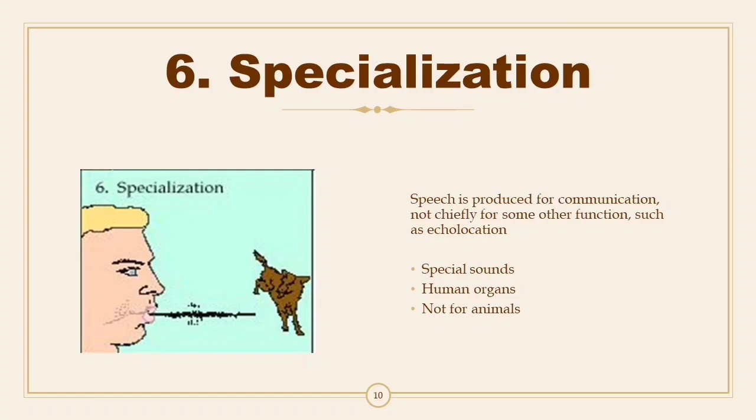Sixth: Specialization. Speech is produced for communication, not simply for some other function such as echolocation. The organs used for producing speech are specially adapted to that task — the human lips, tongue, and throat have been specialized into speech apparati, instead of being merely eating apparati as in many other animals. For example, dogs are not physically capable of all the speech sounds that humans produce because they lack the necessary specialized organs.